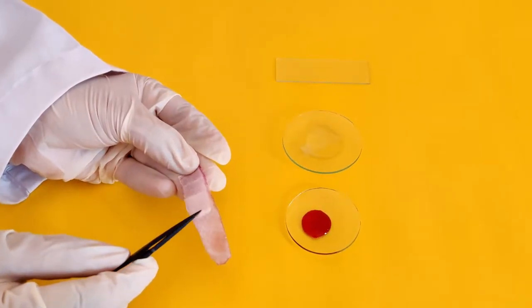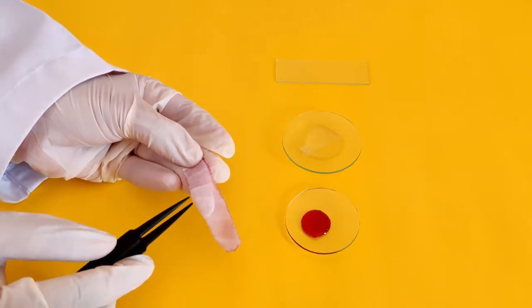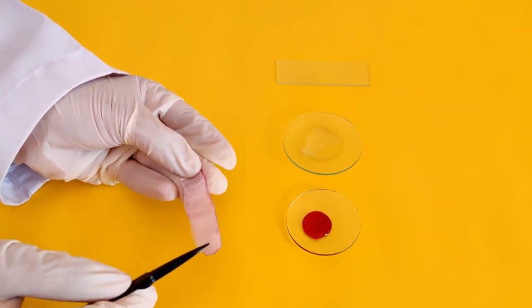Using the tweezers, peel off the thin white film from the epidermal layer inside the onion.